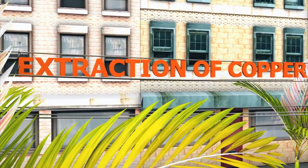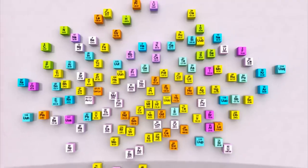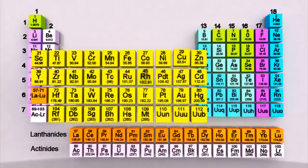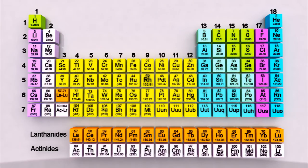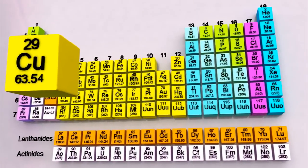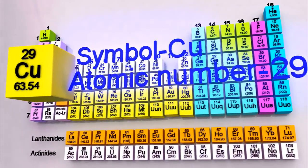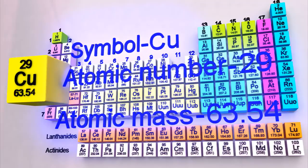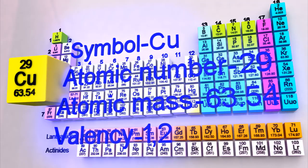Look at the periodic table. Can you identify the position of copper exactly? Period number 4, Group number 11. It is represented by symbol Cu, atomic number 29, atomic mass 63.54. For its valency 1 and 2.